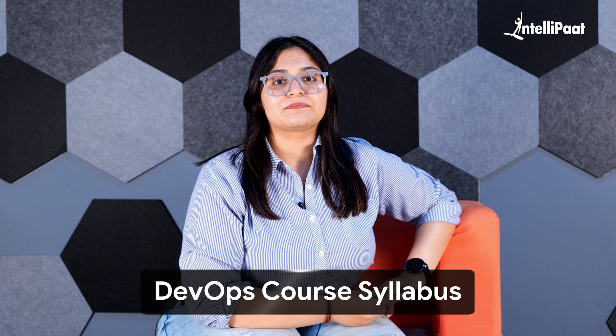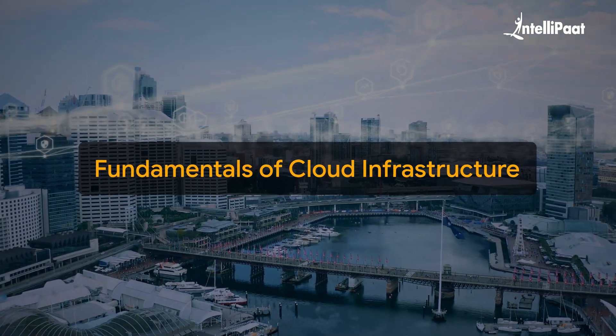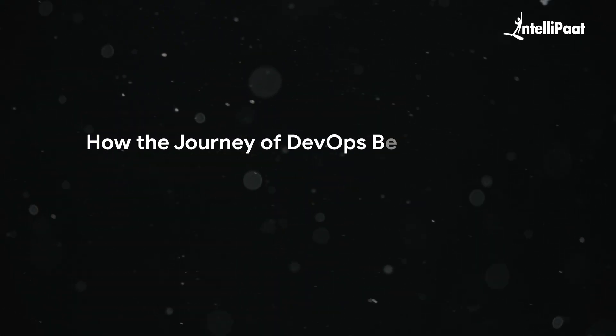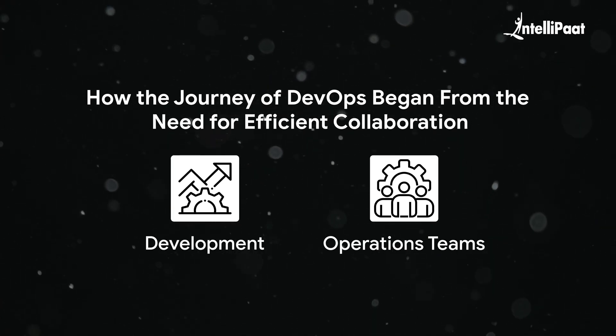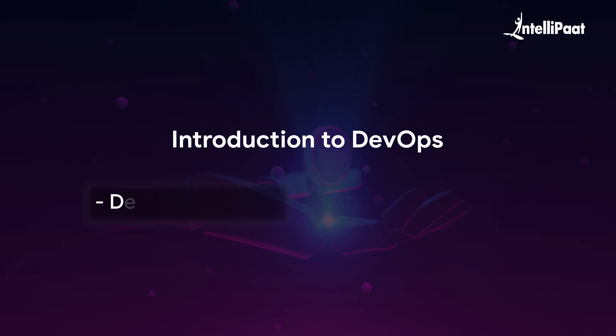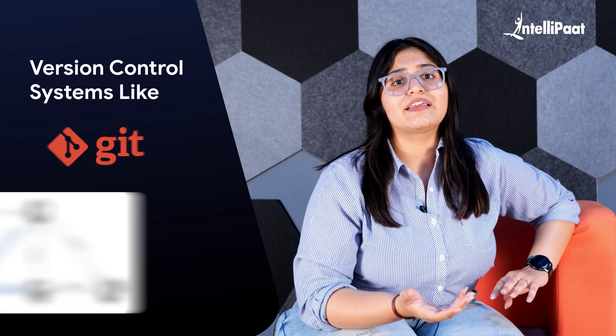So without wasting any further time, let's begin our discussion about the DevOps course syllabus. Generally, if you are a beginner, any DevOps course program must start by clearing the fundamentals of cloud infrastructure and how the journey of DevOps began from the need for efficient collaboration between development and operation teams. The course will also cover an introduction to DevOps, the DevOps lifecycle, DevOps tools, and you will also explore version control systems like Git.